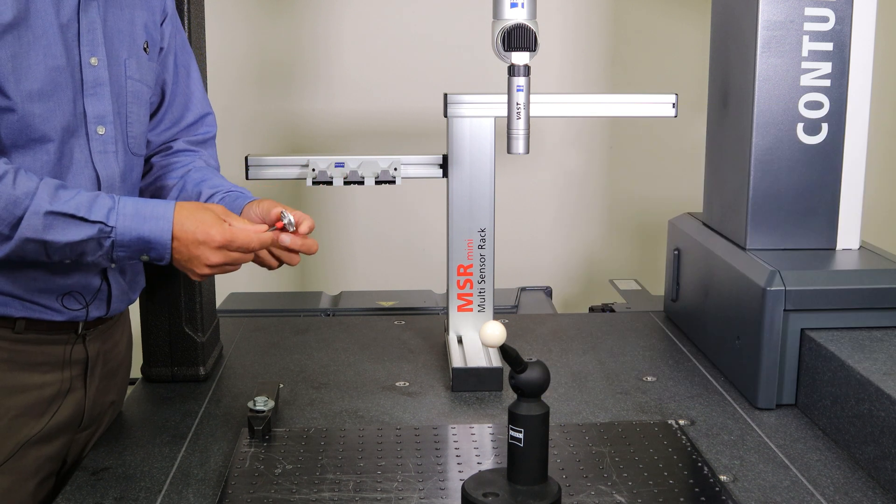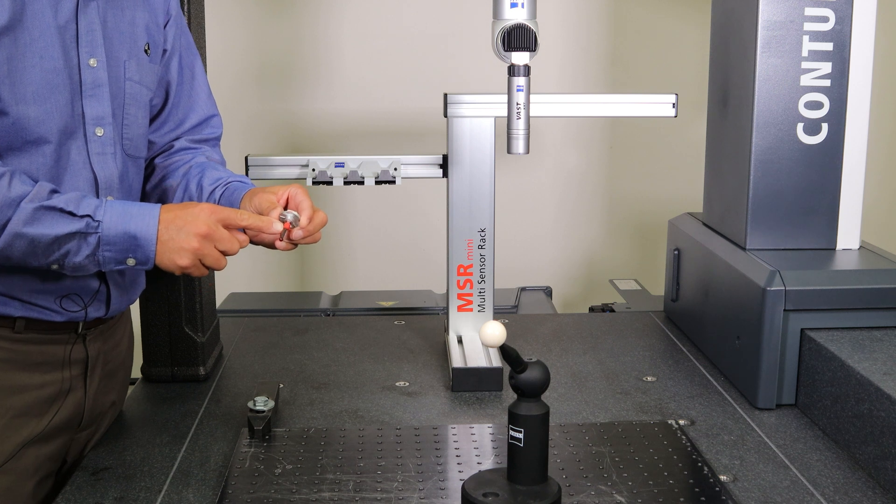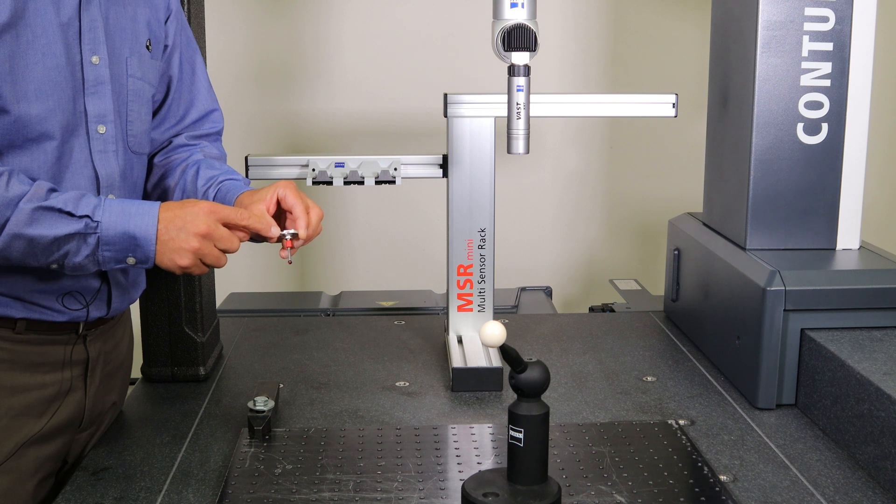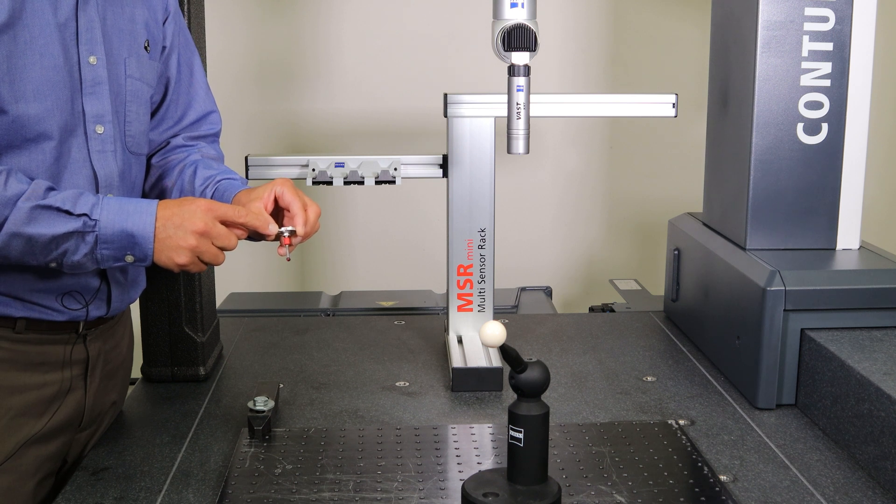Every machine comes with a master probe. Your master probe has a red collar around the stylus and the master probe adapter plate typically has red painted dots on the side of it.